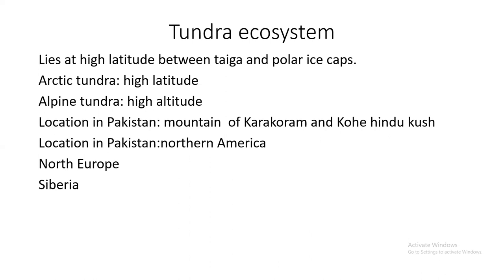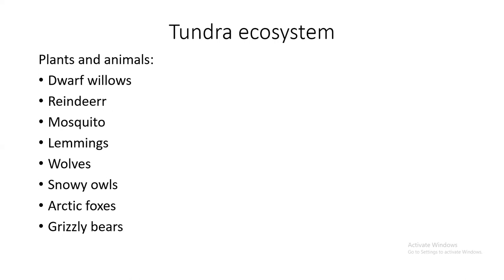Some birds live here, but in winter season they migrate. Animals like lemmings are found here. Dwarf willows, reindeer, mosquitoes, lemmings, snowy owls, arctic foxes, and grizzly bears — large bears — are found here. This is a fragile type of ecosystem.